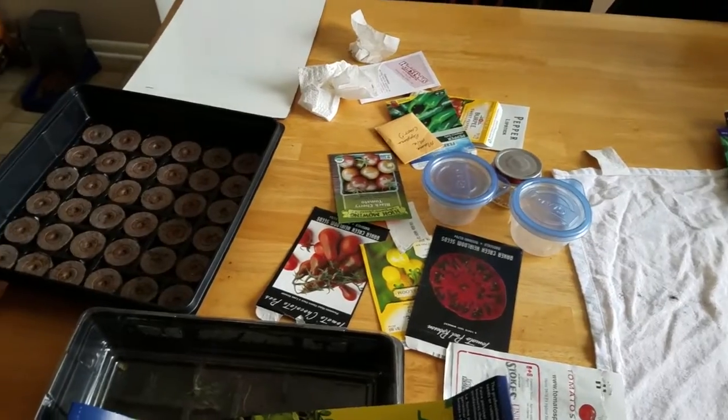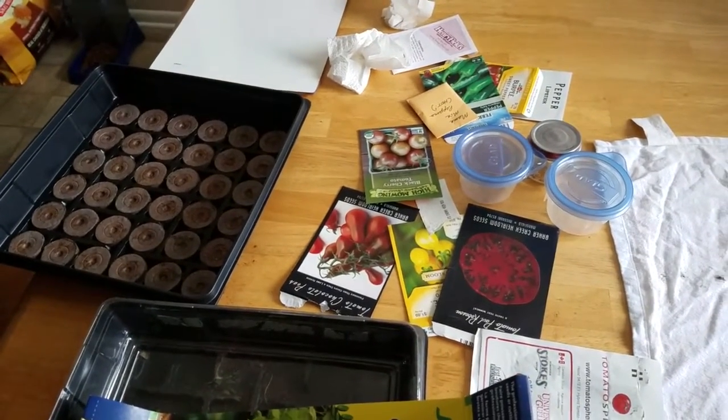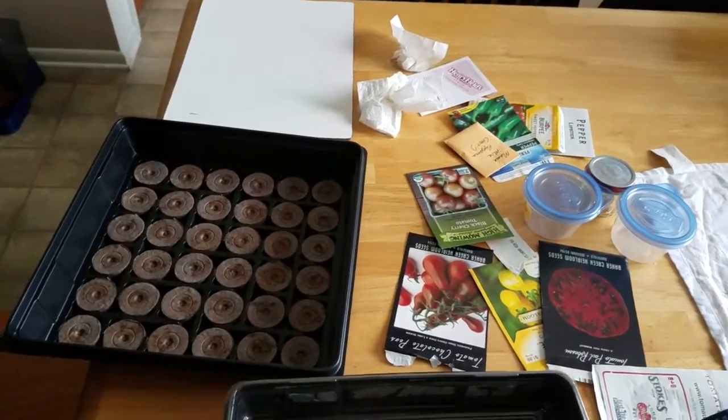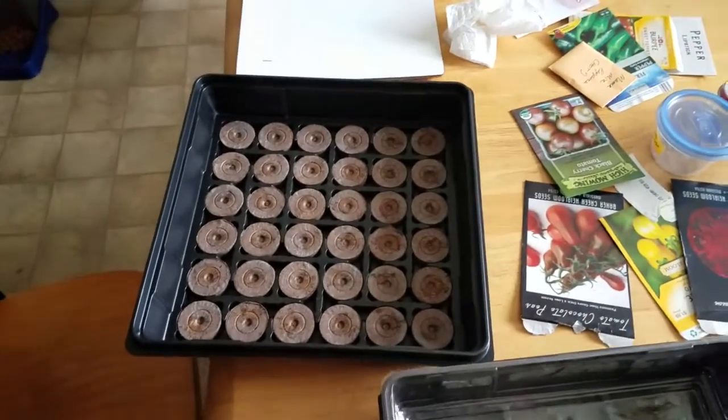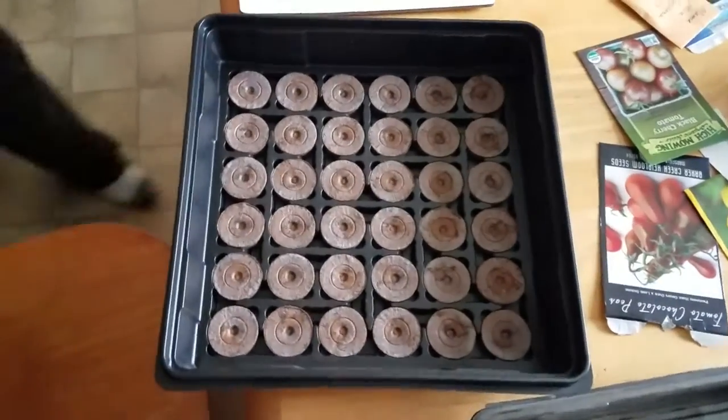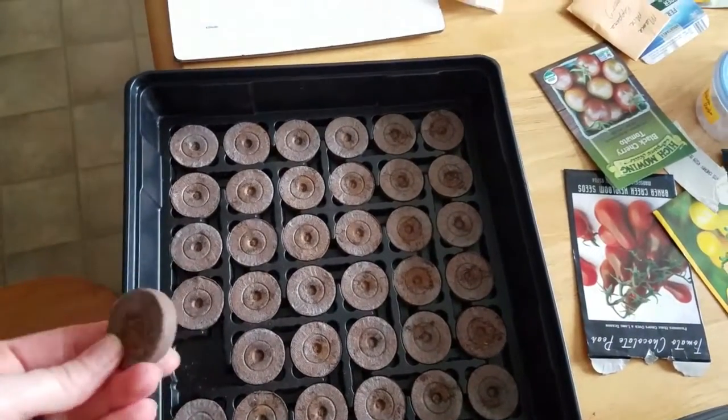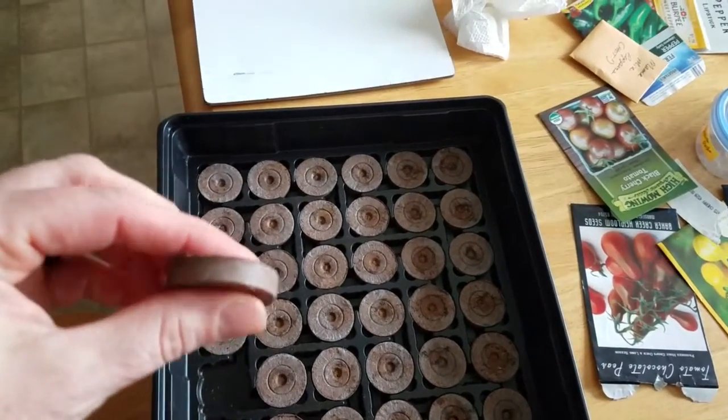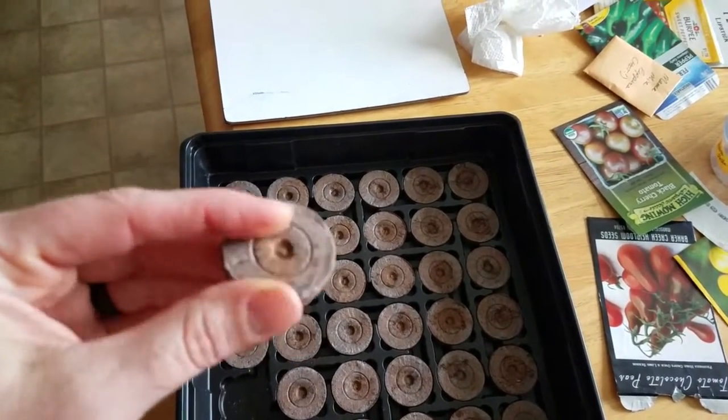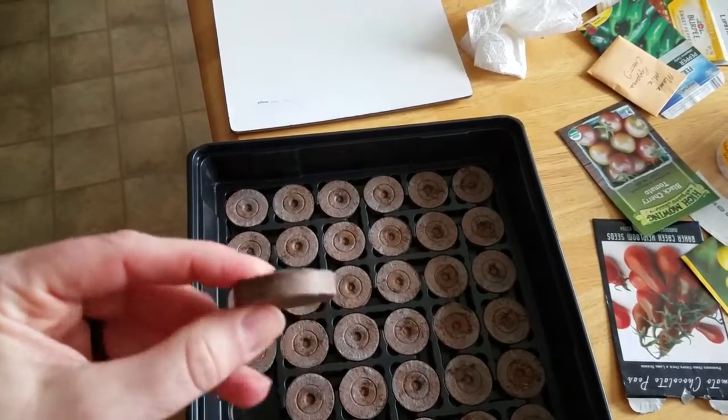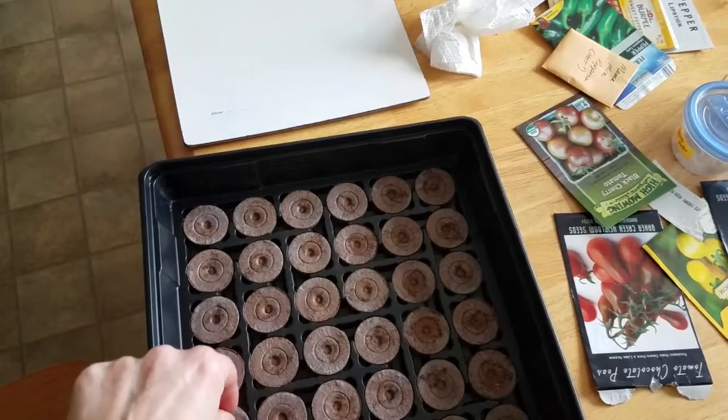Right now it's time to start our tomatoes and peppers, and I realize that there is some math involved, so we're going to have you help figure out some stuff. First of all, this is a little greenhouse that the seeds will start in, and it's one of my favorite ways to start seeds. It looks like a little hockey puck, and when you add water, it will grow into a little pot, which you'll see at the end of the video.